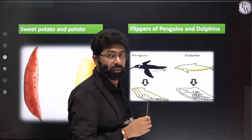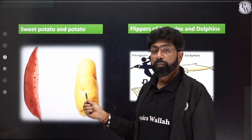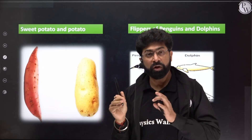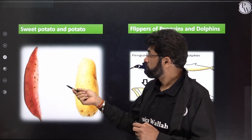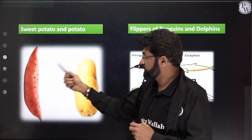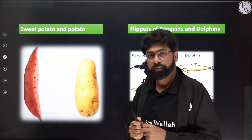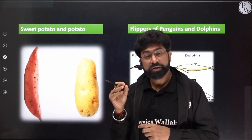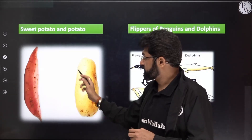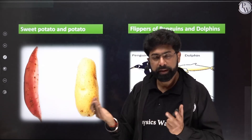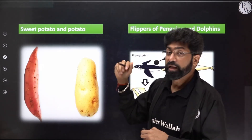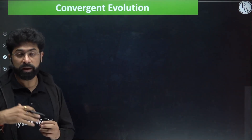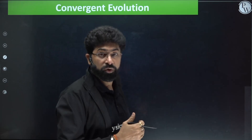Sweet potato and potato are another example of analogous structures. Sweet potato is a modification of root while potato is a modification of stem — different origins — but both function as food storage organs. They have different origin but same function, making them analogous structures. Analogous structures support convergent evolution.